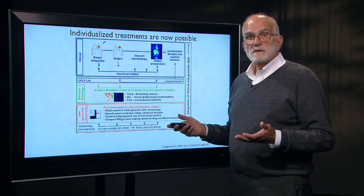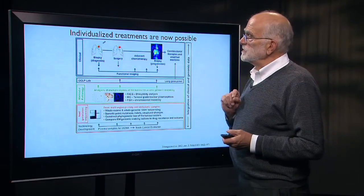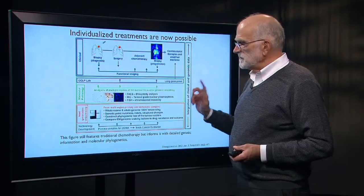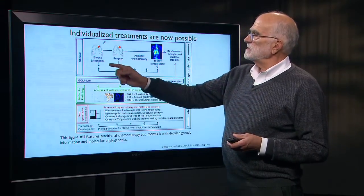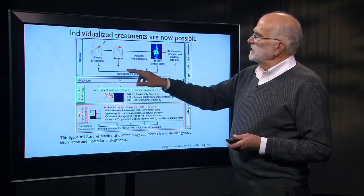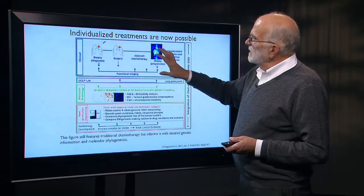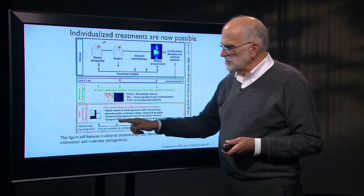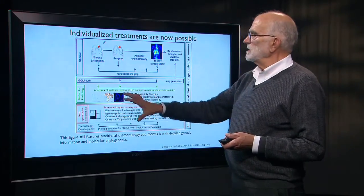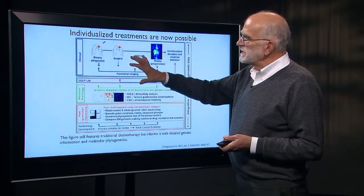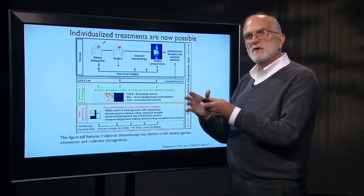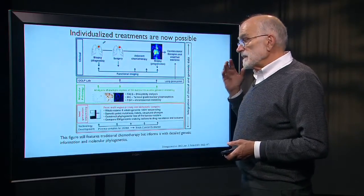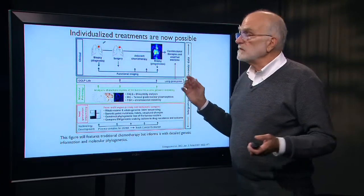It is also now possible using modern sequencing methods to individualize treatment. In this approach, traditional chemotherapy is informed with detailed genetic information. The patient comes in, a biopsy is taken, and surgery likely removes the primary lesion. During chemotherapy, the biopsy goes through molecular pathology and next-generation sequencing, giving information on multiple regions of the cancer and the particular susceptibilities of different parts of the cancer cell phylogenetic tree. This allows intervention with combinational therapy and stratified medicine — and the same can probably be done even better with targeted immune therapy.